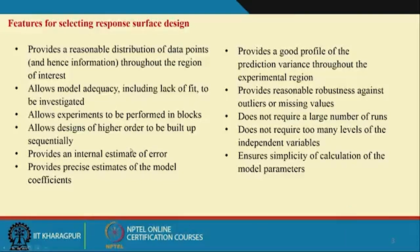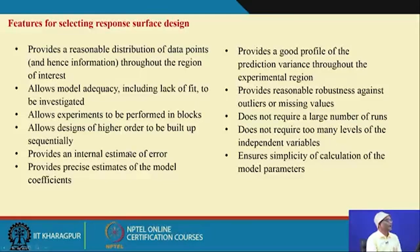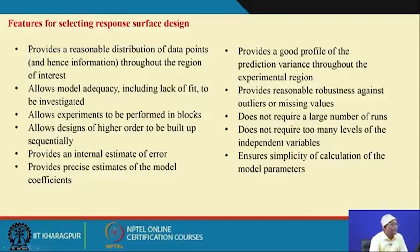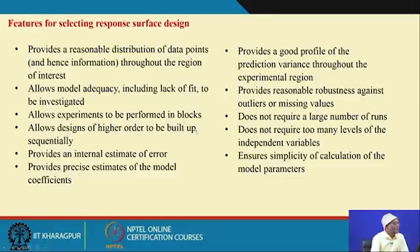The adequacy of the model used for analyzing the data should be found out, and also the lack of fit — which we described in the regression lectures — should also be estimated. The design should be such that it allows experiments to be performed in blocks, which is very important because randomization, blocking, and replications are the three basic principles. Experiments are dependent on useful resources including raw materials, so you may require to do intentional blocking or you are forced to do it, and your design should allow you to do this.